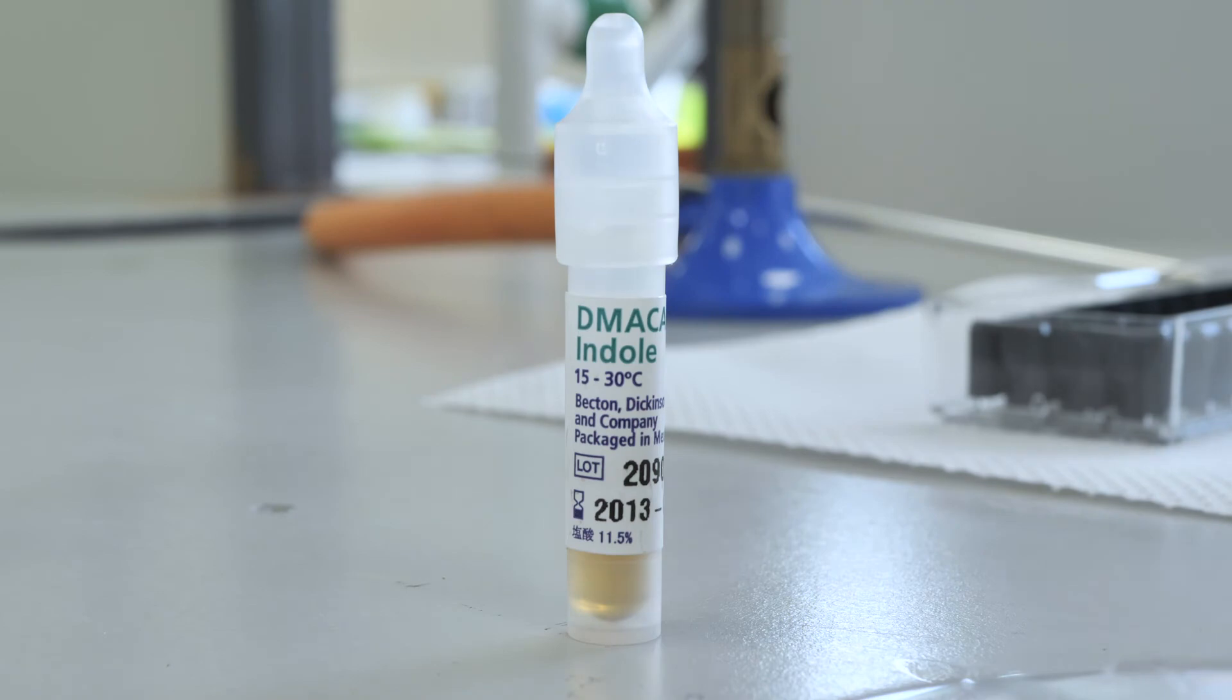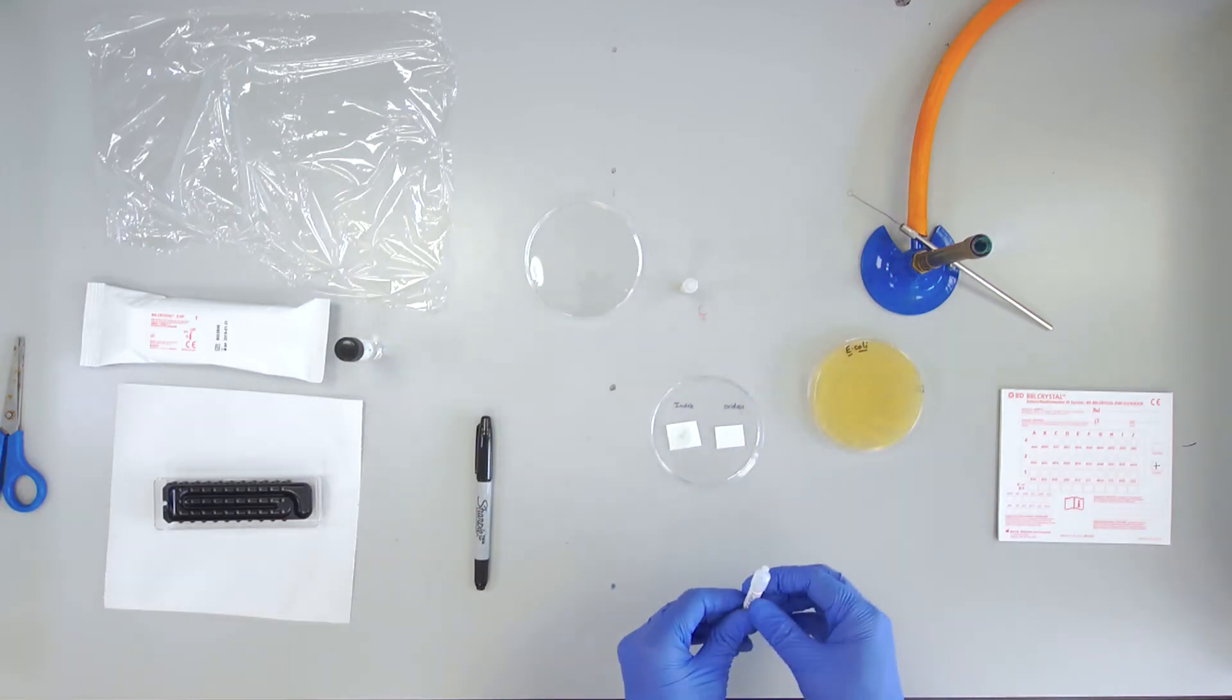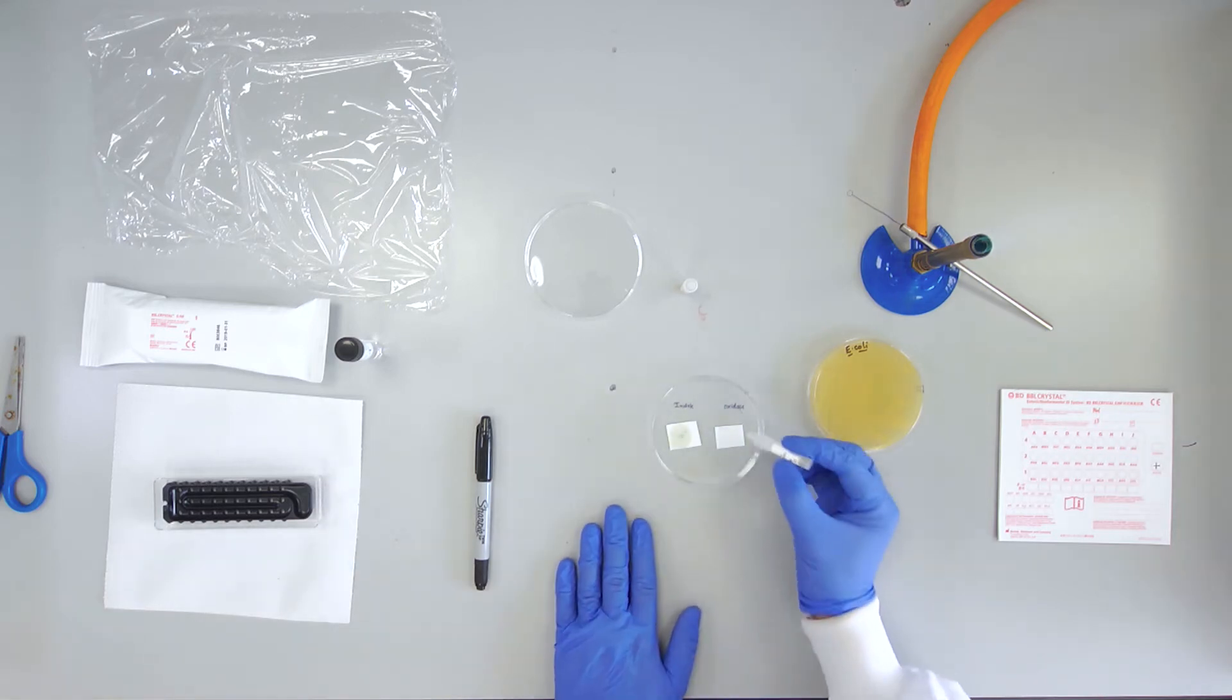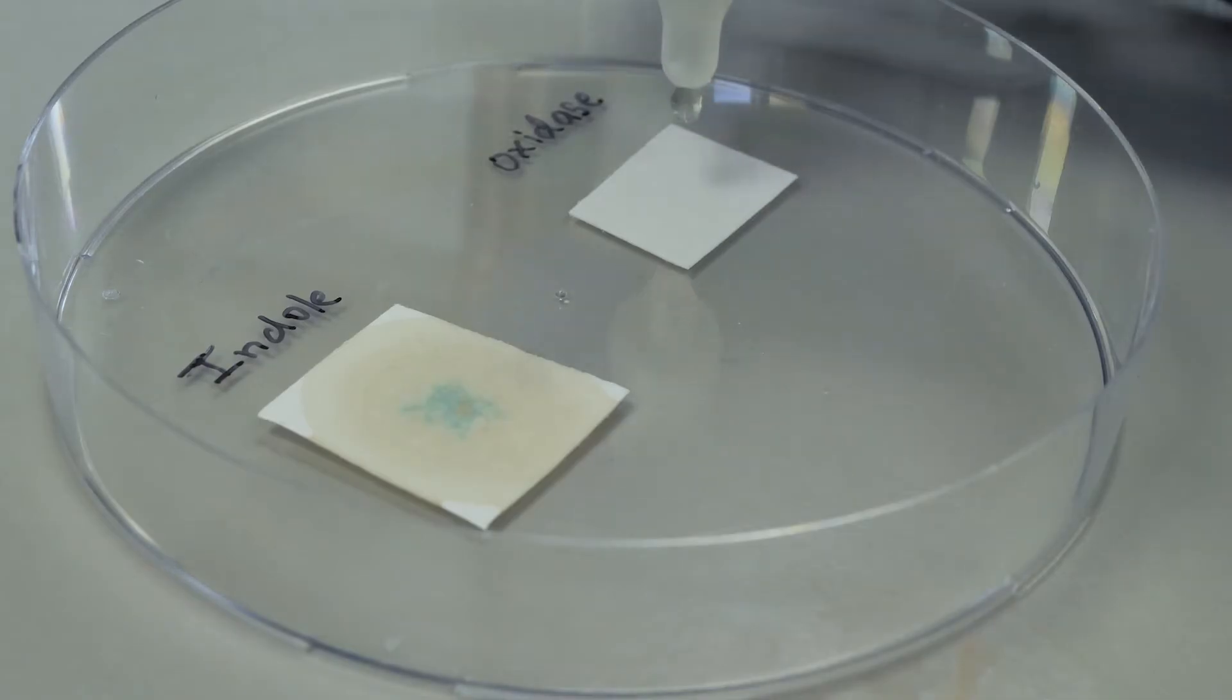On the second piece of filter paper add a few drops of the oxidase test vial and aseptically transfer another colony to the paper and mix.